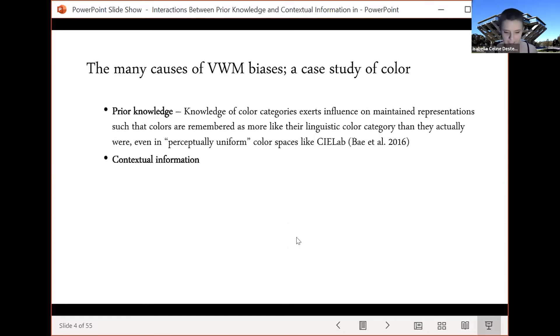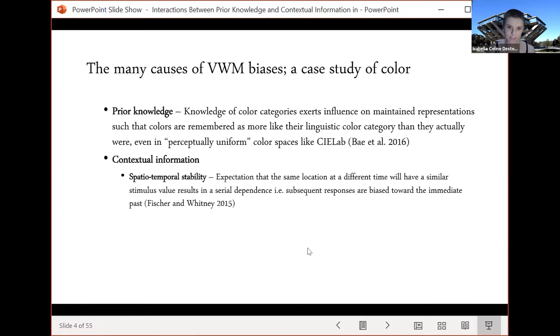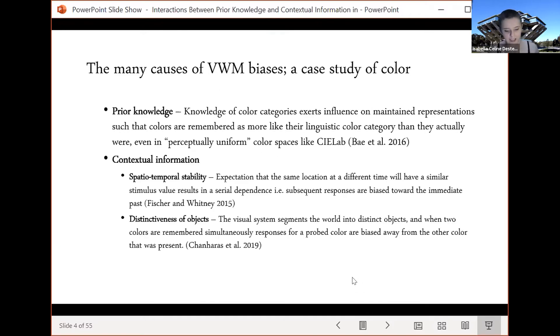The other two sources of biases that we will look at have to do with contextual information. The first contextual bias arises from the assumption of spatial temporal stability of the world. The expectation that the same location at a different time will have a similar stimulus value results in serial dependence such that subsequent responses are biased towards the immediate past. And the second contextual bias has to do with the assumption that objects are separate or distinct. The visual system segments the world into distinct objects and when two colors are remembered simultaneously responses for a probe color are biased away from the other color that was present on the display.